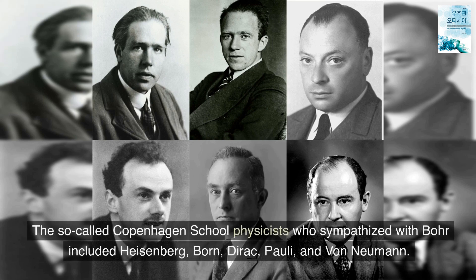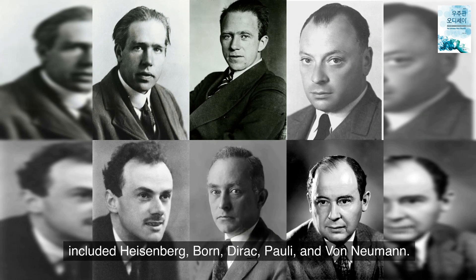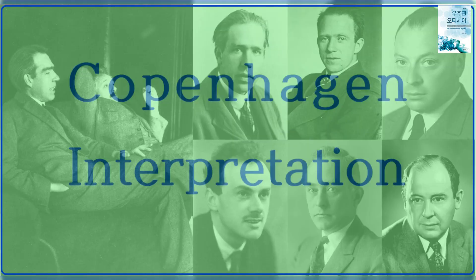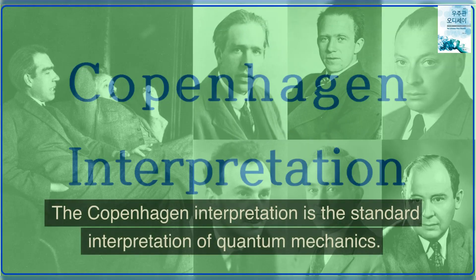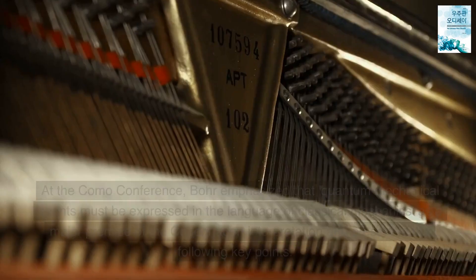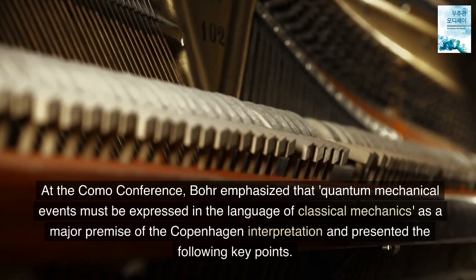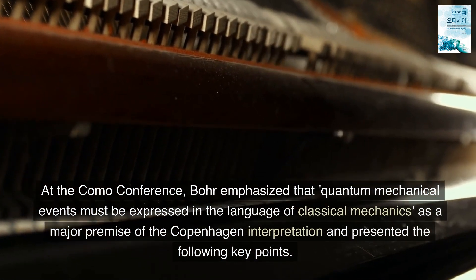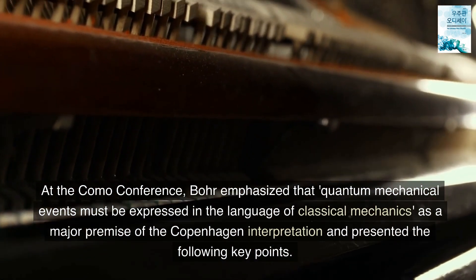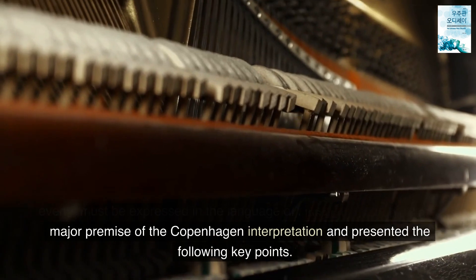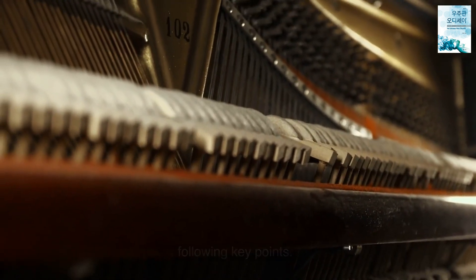The so-called Copenhagen School physicists who sympathized with Bohr included Heisenberg, Born, Dirac, Pauli, and von Neumann. The Copenhagen interpretation is the standard interpretation of quantum mechanics. At the Como conference, Bohr emphasized that quantum mechanical events must be expressed in the language of classical mechanics as a major premise of the Copenhagen interpretation and presented the following key points.